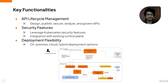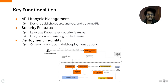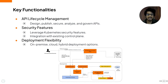Looking at key functionalities: API lifecycle management allows you to seamlessly design, publish, secure, analyze, and govern APIs throughout their lifecycle — all from a unified platform, including governance compliance. Our security features leverage Kubernetes security, tightly integrated with the existing control system, ensuring robust protection for APIs and applications against potential threats and vulnerabilities. Finally, deployment flexibility means whether you prefer on-premise, cloud-based, or hybrid deployments, our solution offers versatile options to suit your specific needs.